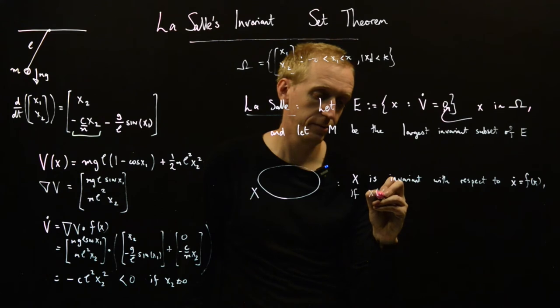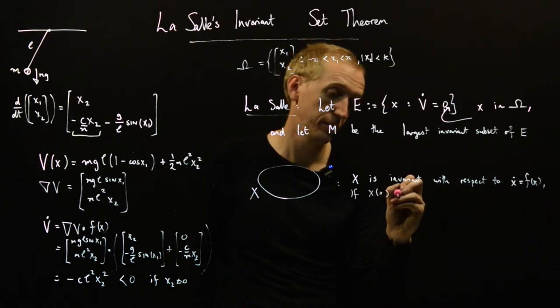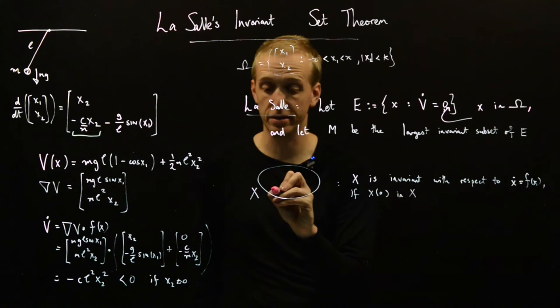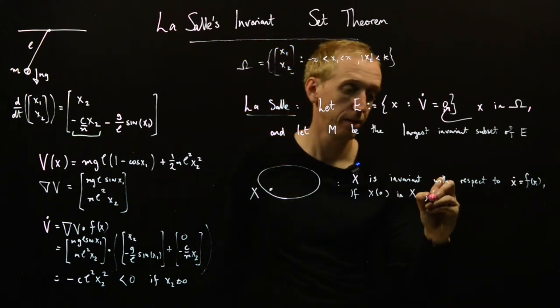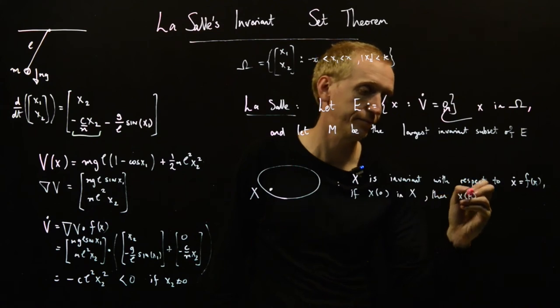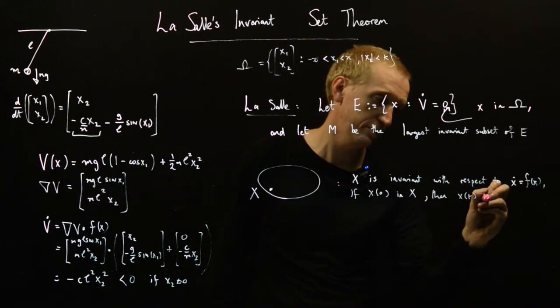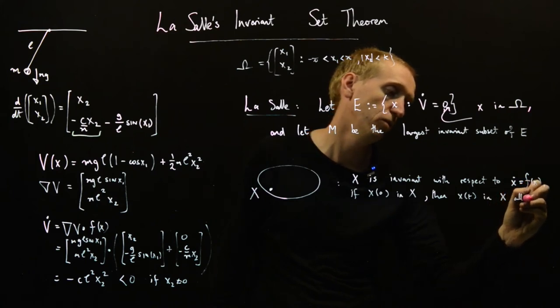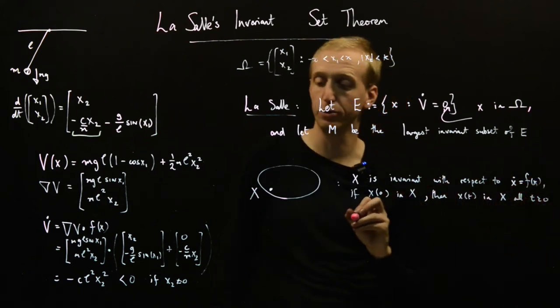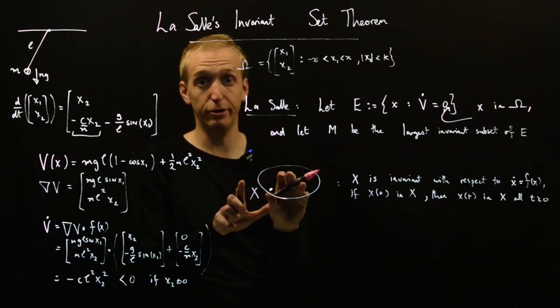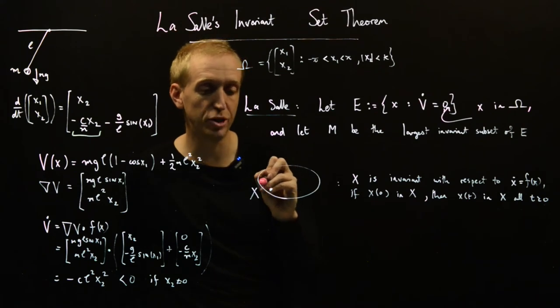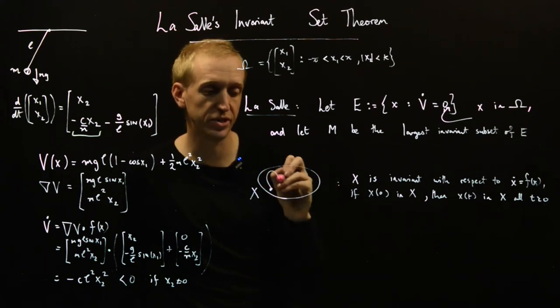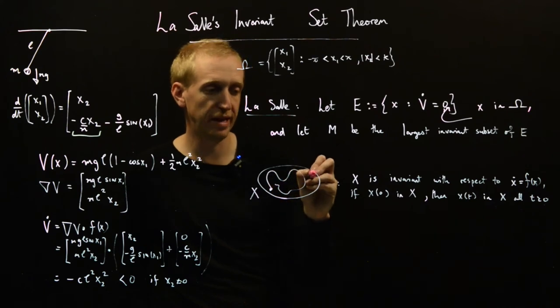So a set X, we say X is invariant with respect to a particular set of dynamics if x(0) in X, so if we start at some point in our set X, then our trajectory stays in X for all t greater than or equal to zero. So a set is said to be invariant with respect to a set of dynamics if you initialize it anywhere in this set, it will stay in there.